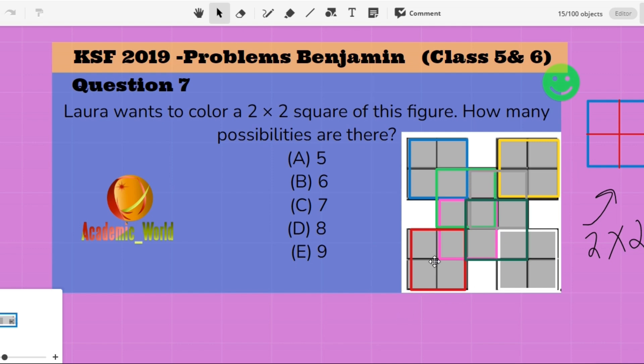Okay, so you can see that there are one, two, three, four, five, six, seven, eight possibilities. So option D is correct, so that is eight. I hope you would understand this video.